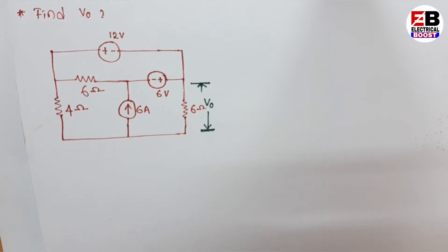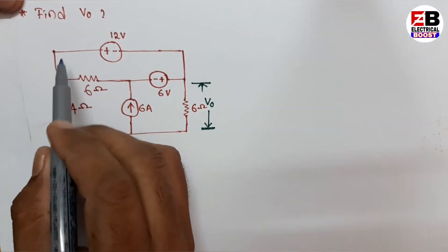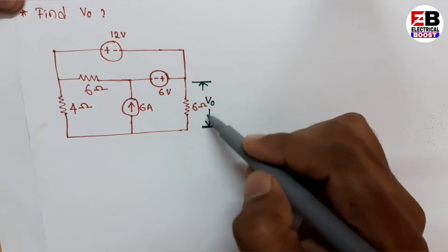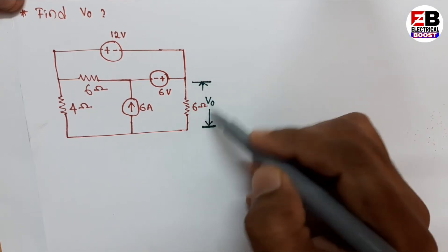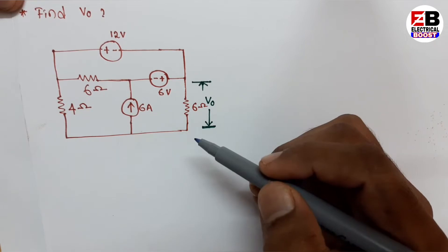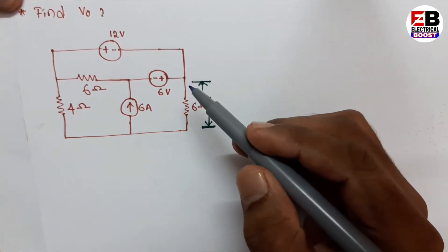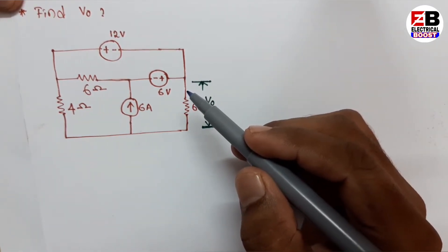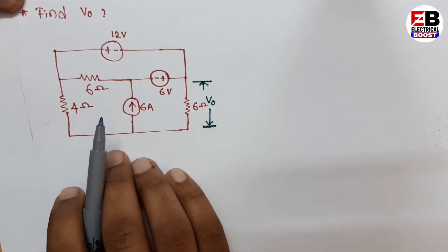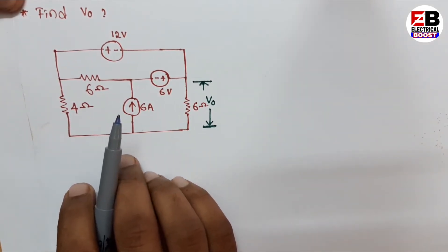Here we see the question is given: find V-naught, that is the voltage across this 6 ohm resistor. Here we can also apply super mesh, but in this case we will apply supernode analysis.